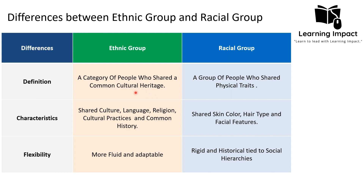A racial group, on the other hand, is a group of people who share some physical traits. Physical traits include skin color, hair texture, and facial features — these form the foundation of the racial group. So in the ethnic group, individuals share common culture, while in the racial group, individuals share physical features that are visible characteristics associated with an individual by birth.